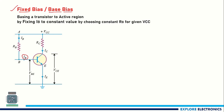We make IB constant by providing a constant resistor RB through VCC. To make the base-emitter junction forward biased, we need to bring the base-emitter voltage VBE positive. For an NPN transistor, the positive terminal of the voltage source is applied to the P terminal. The collector-base junction is reverse biased, and by choosing a constant RB with VCC, we can make IB constant.